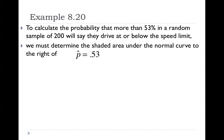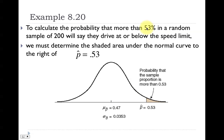We're going to calculate the area underneath the normal curve to the right of 0.53 — the area that is greater than 0.53. Why to the right? Because we're trying to find the probability that more than 53% — 'more than' means area to the right. On our bell curve, p̂ of 0.53 is to the right of 0.47, and we shade area to the right of 0.53.